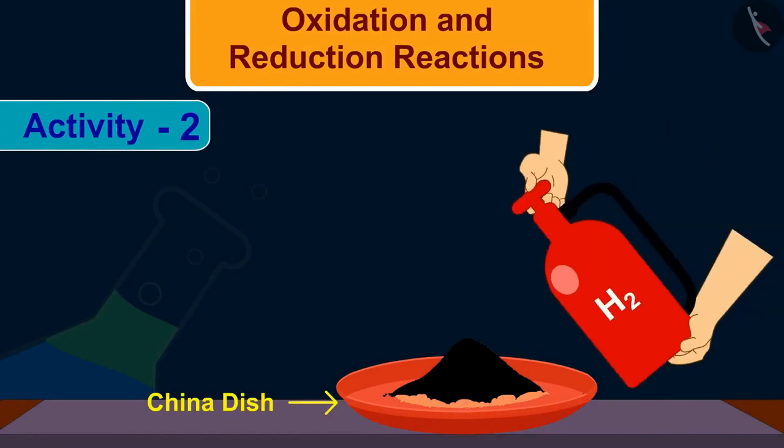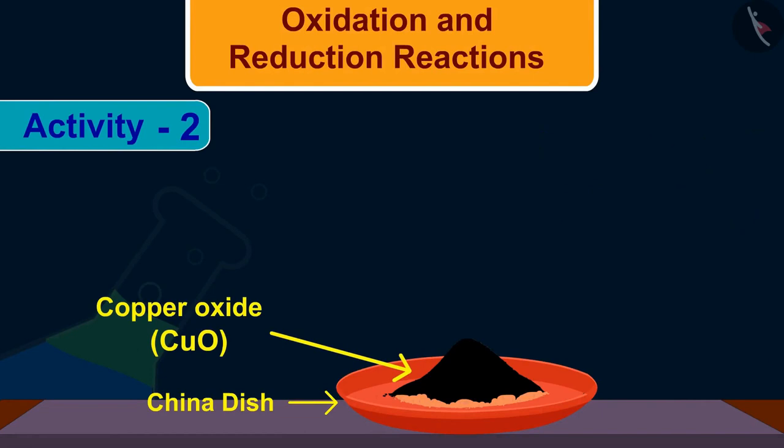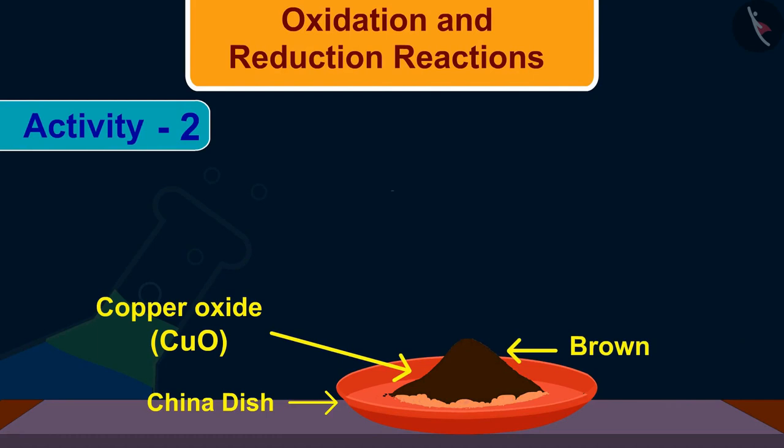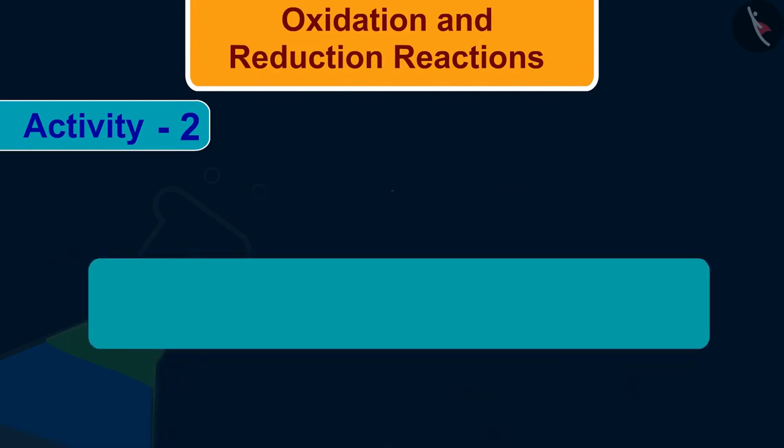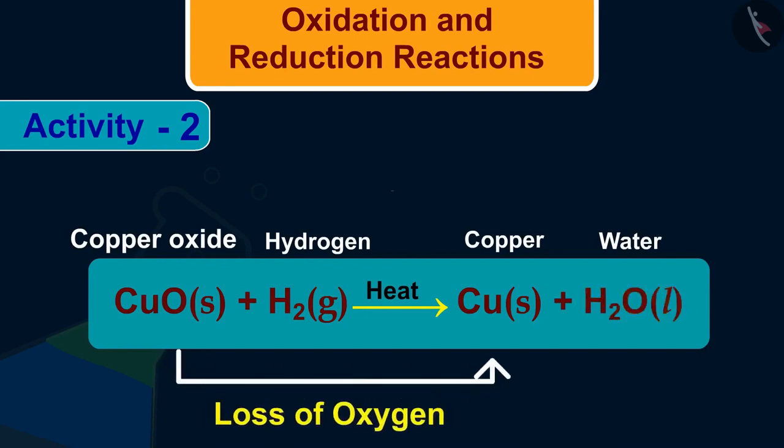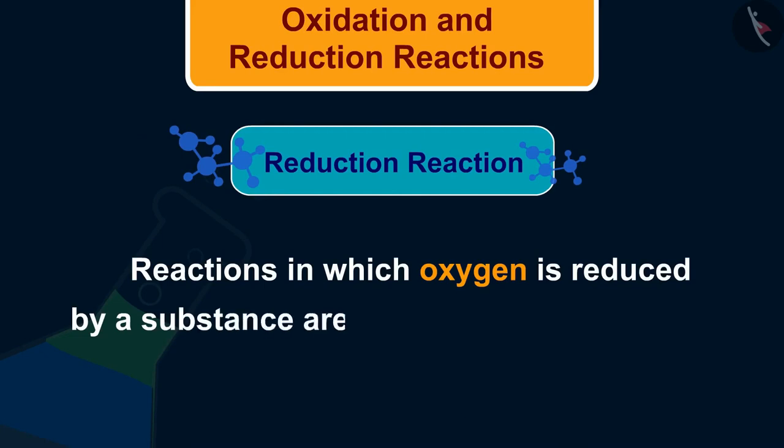If hydrogen gas is passed over this heated material, CuO, what do you observe? You will observe the black coating on the surface turns brown. This is because the reverse reaction takes place and copper is obtained. There is a loss of oxygen in the copper oxide. In other words, copper oxide is reduced. A reaction in which oxygen is reduced by a substance are called reduction reaction.